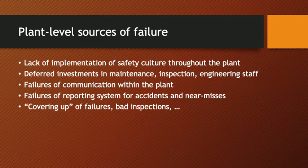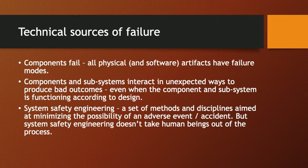Failures of reporting systems for accidents and near misses are another key source of error. We've seen how important it is to have open, unencumbered reporting of accidents and near misses with a no-blame environment. Many organizations have a very hard time implementing that idea. A more common result is that workers and frontline supervisors are more inclined to cover up failures or bad inspection reports in order not to get in trouble — and that itself is a source of potential failure in the future.